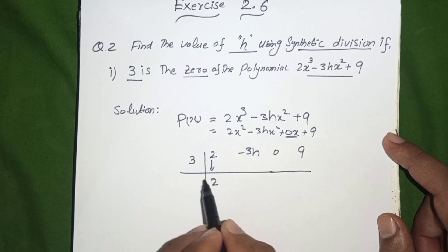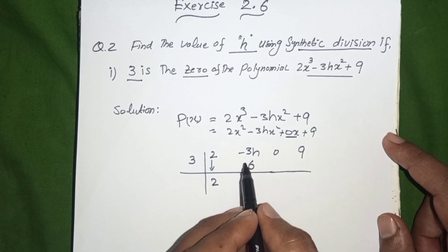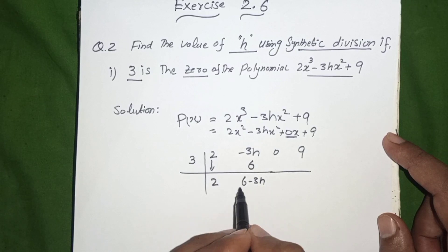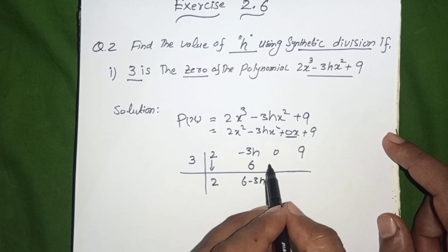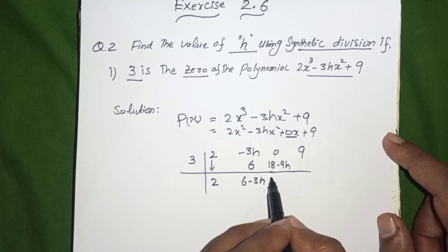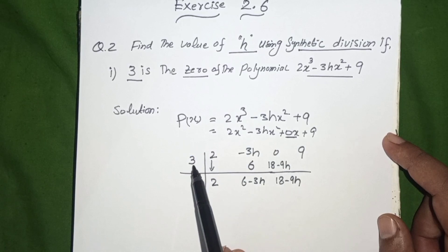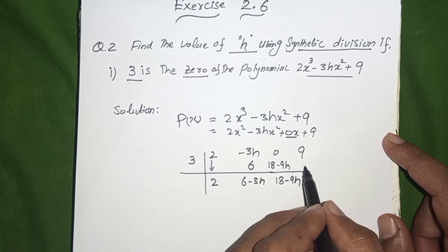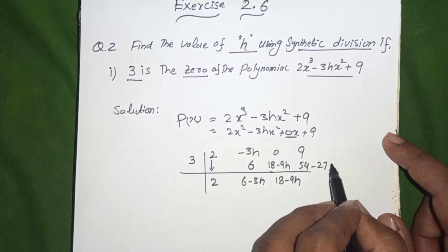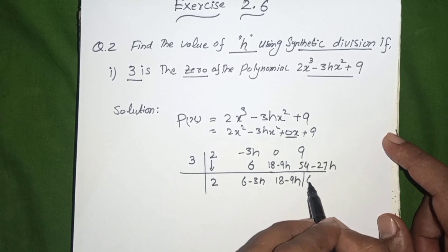We bring down 2. Multiply 2 by 3 (the divisor), we get 6. Add to -3H: we get 6 - 3H. Multiply 3 by 6, we get 18. Then 3 × (-3H) = -9H. Adding gives us 18 - 9H. Multiply 3 by (18 - 9H), we get 54 - 27H.